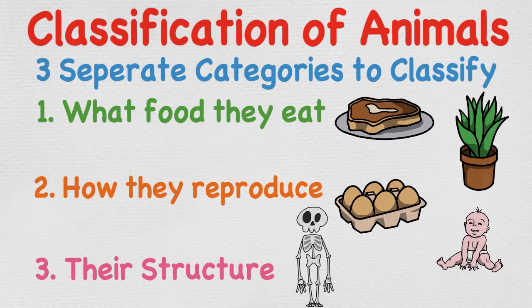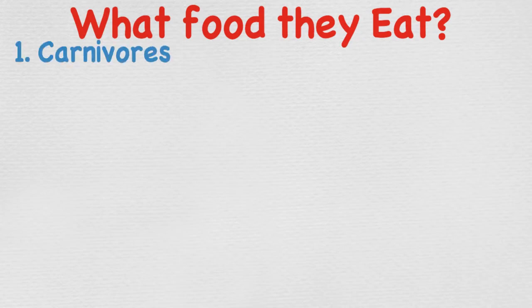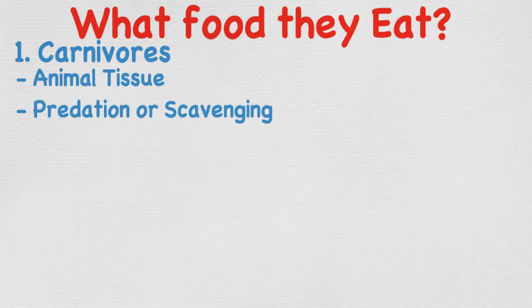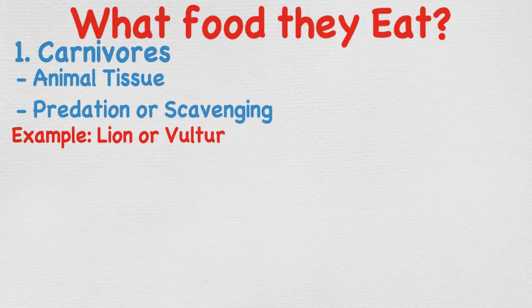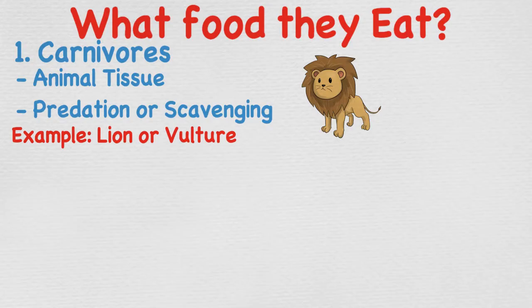Let's look at classifying according to the food they eat. We have three categories: the first one is carnivores, second is herbivores, and third is omnivores. Carnivores are animals that derive their energy and nutrient requirements from a diet mainly or exclusively consisting of animal tissue, whether through predation or scavenging. An obvious example is a lion — they hunt other animals such as antelope or zebras. Another example is a vulture, which scavenges and mainly consumes dead carcasses.